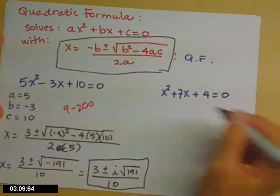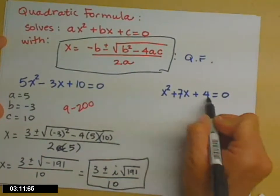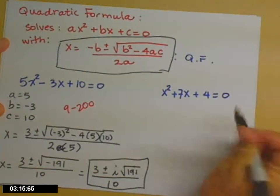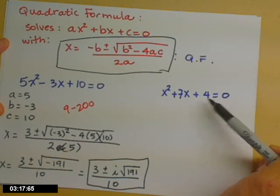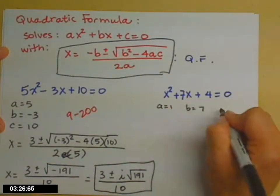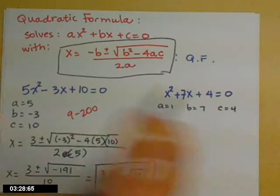All right, second example. Let's move a little faster. So factors of 4 that add to give 7, leading coefficient was 1, can't find them. That means I can either complete the square, which I don't want to do, or I can use my quadratic formula, which is what we're studying, so that's what we'll do. So a is 1, b is 7, c is 4.